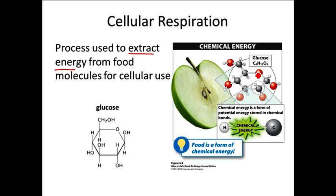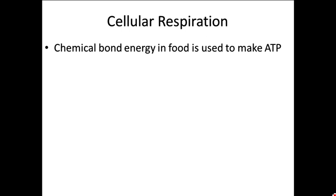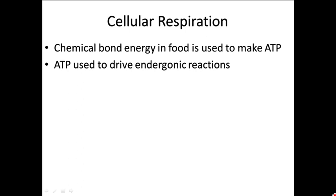Food contains chemical energy in the form of chemical bond energy, and in particular these carbon-carbon and carbon-hydrogen bonds are what are really high energy. We eat that food to get the energy out of it, and the way we get the energy out is through this process of cellular respiration. We use it to make ATP. So that chemical bond energy that's in food, we extract it through cellular respiration and make ATP.